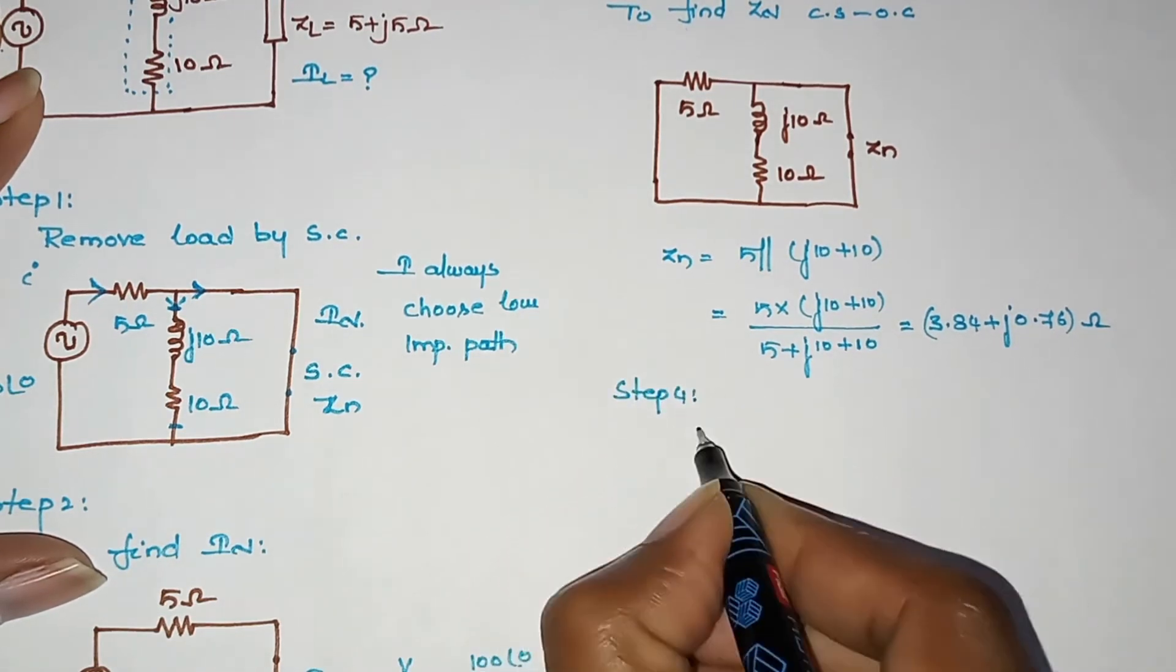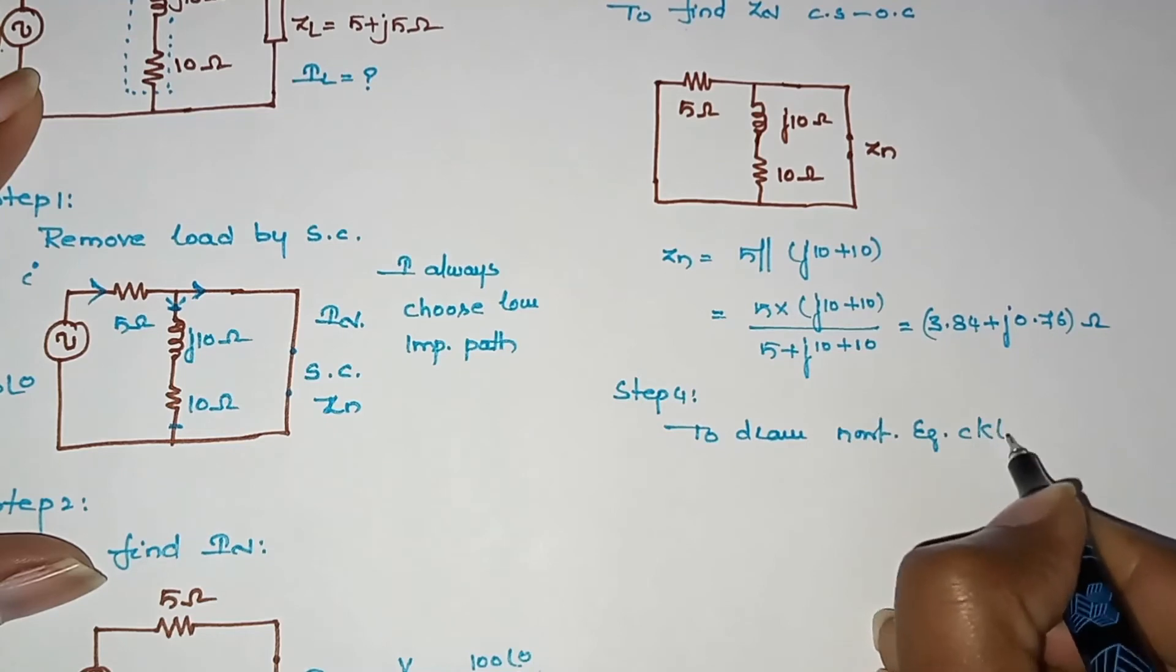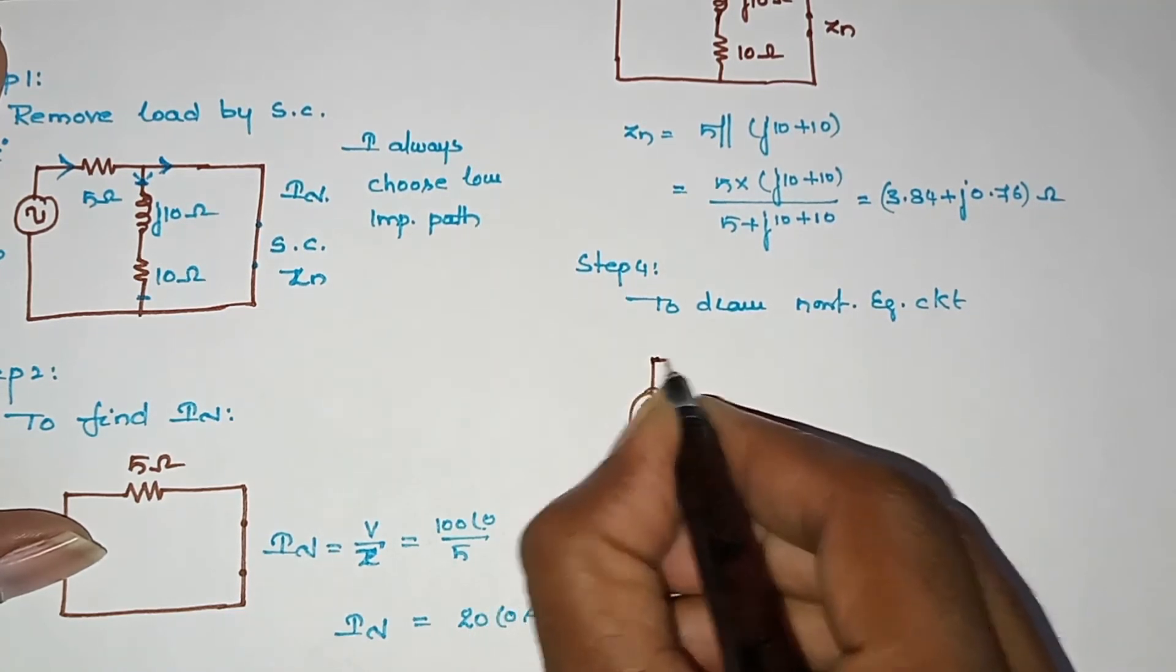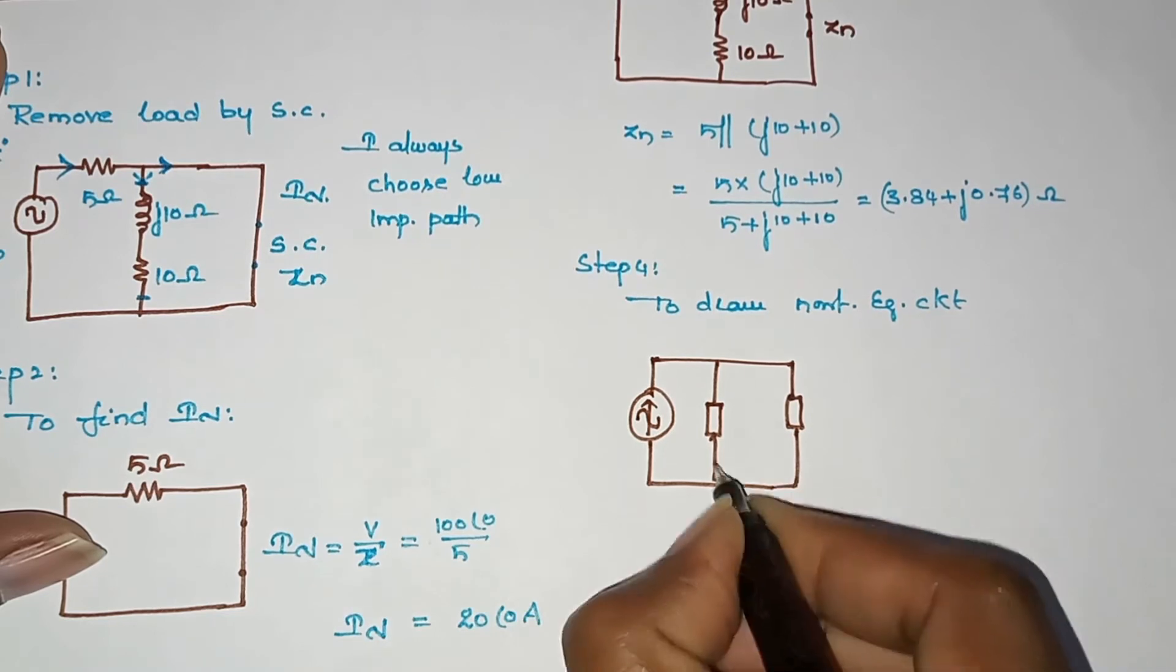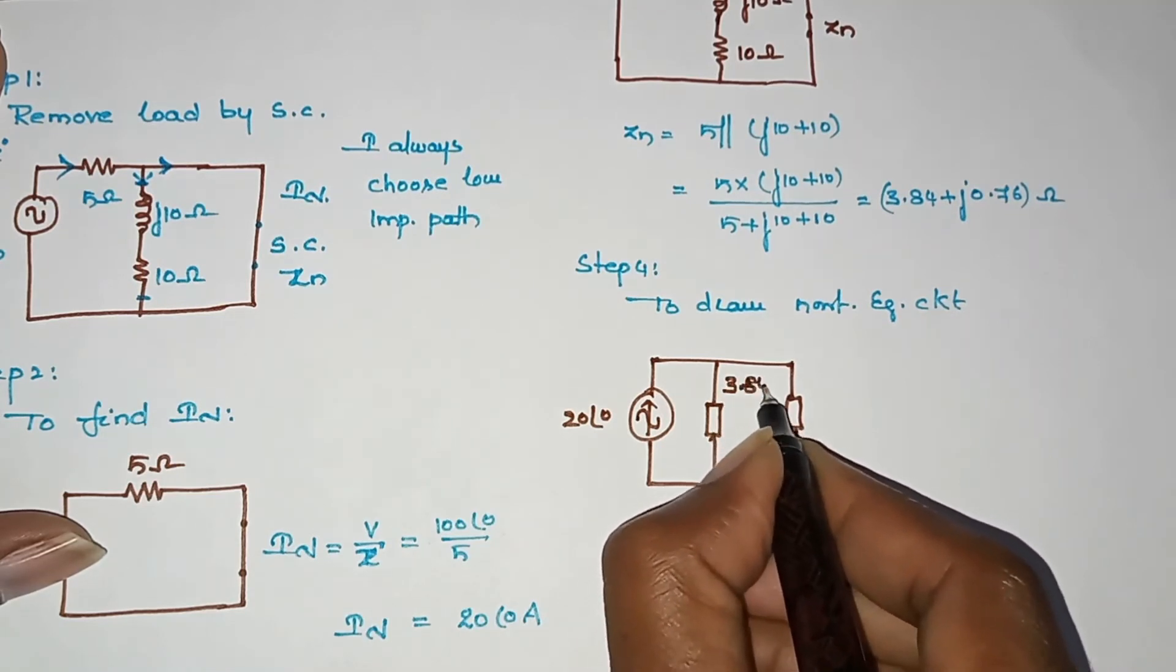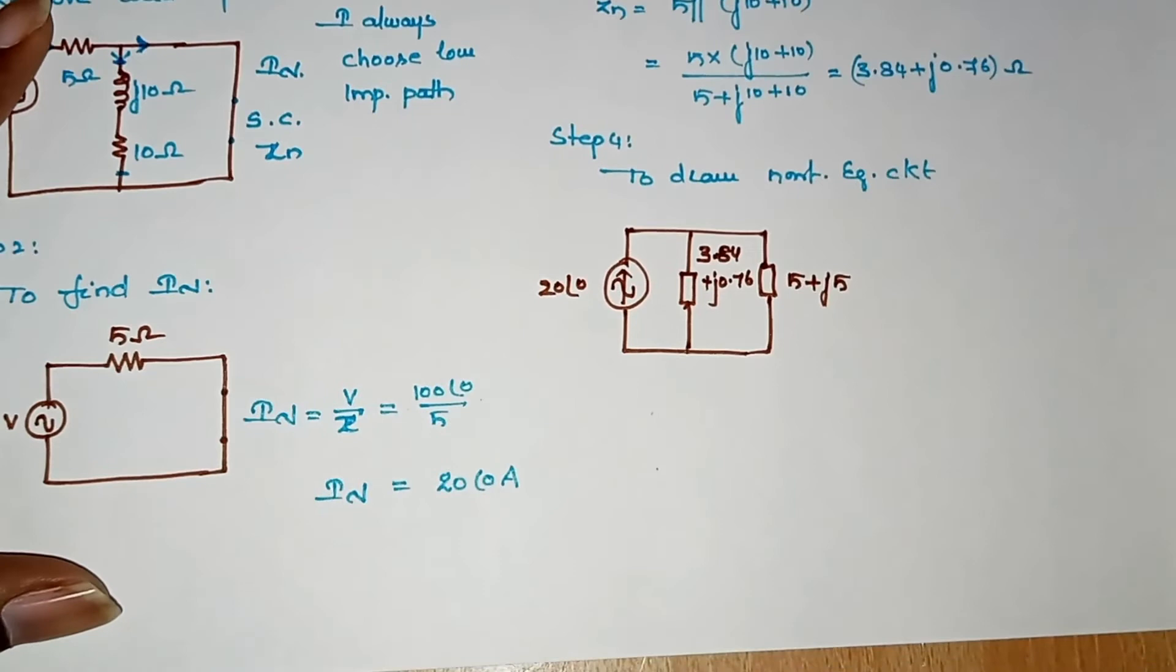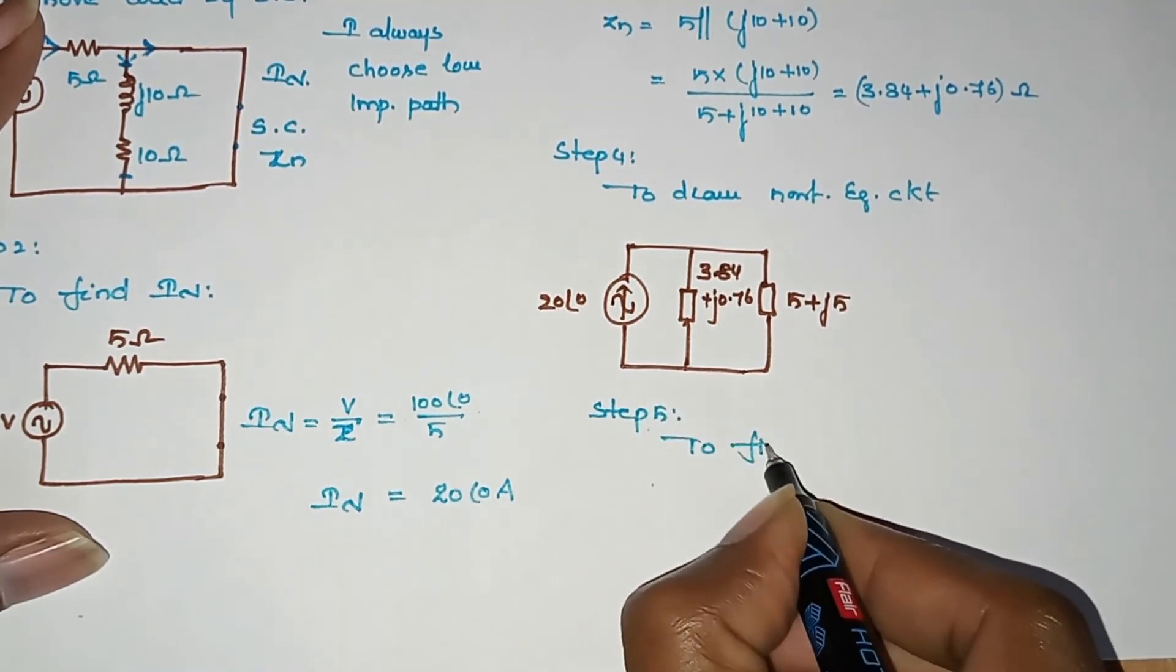Step 4 is to draw Norton equivalent circuit. Then we draw the current source. This is the current source. We have internal impedance. This is internal impedance. The current source is here. This is the load, the load value. Now the value is 20 at angle 0, here IN. My ZN is 3.84 plus j0.76.